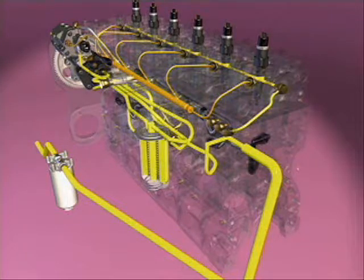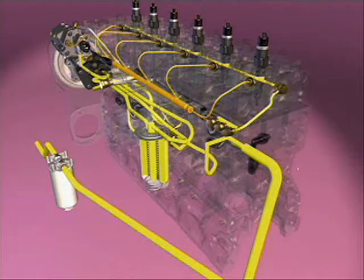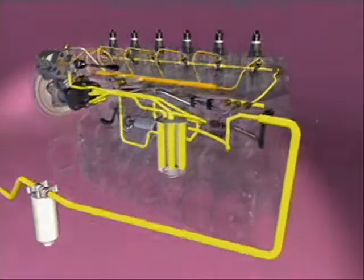The drain lines route drain fuel from the injectors, fuel rail and fuel pump to the fuel drain block. From the drain block, a drain line allows the drain fuel to return to the fuel tank.